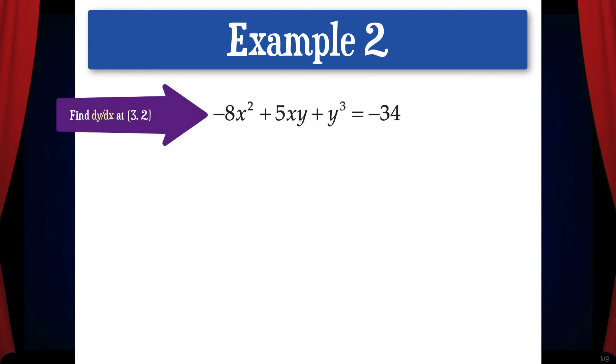Next, we need to find dy/dx at the point (3,2). So let's use implicit differentiation to do this. Taking the derivative with respect to x of each term from left to right gives us negative 16x plus 5y plus 5x dy/dx plus 3y squared dy/dx equals 0.